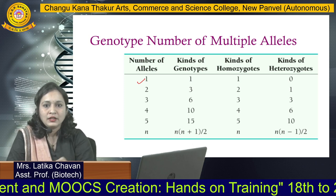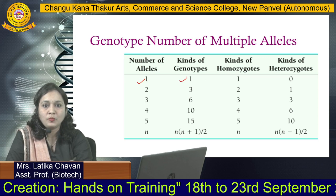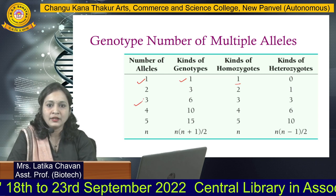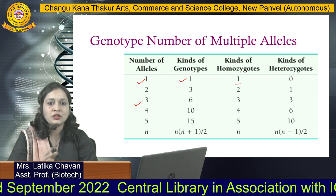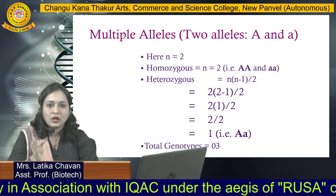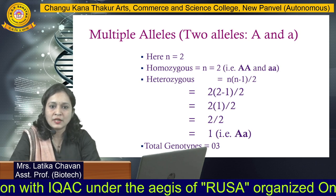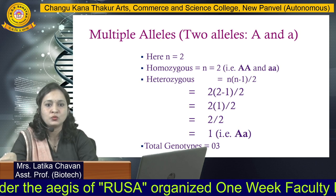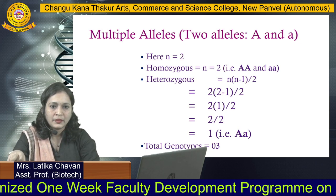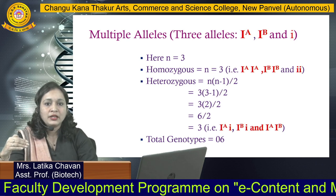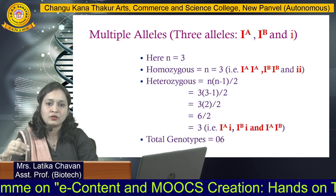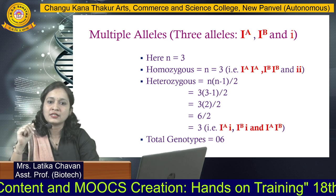For example with one allele, only one genotype is possible — one homozygote and no heterozygous individual. In case of two alleles, three genotypes are possible: two homozygotes (AA or aa) and one heterozygote (Aa). In case of three alleles, six genotypes are possible: three homozygotes and three heterozygotes.